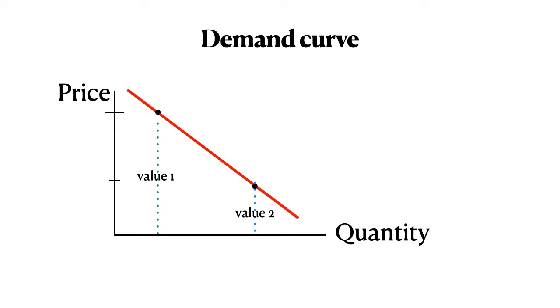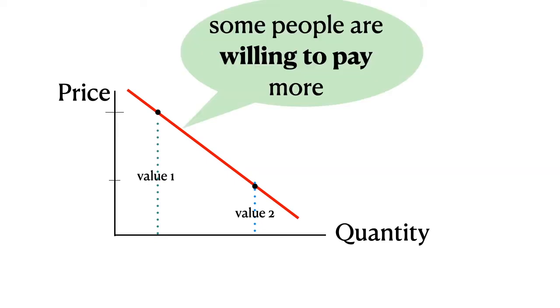So since some consumers place a higher value on the good, it means that they have a higher benefit from it. And what the demand curve simply does is place these consumers in order of how they value the good. So we can see the consumers to the left place higher values than consumers to the right.